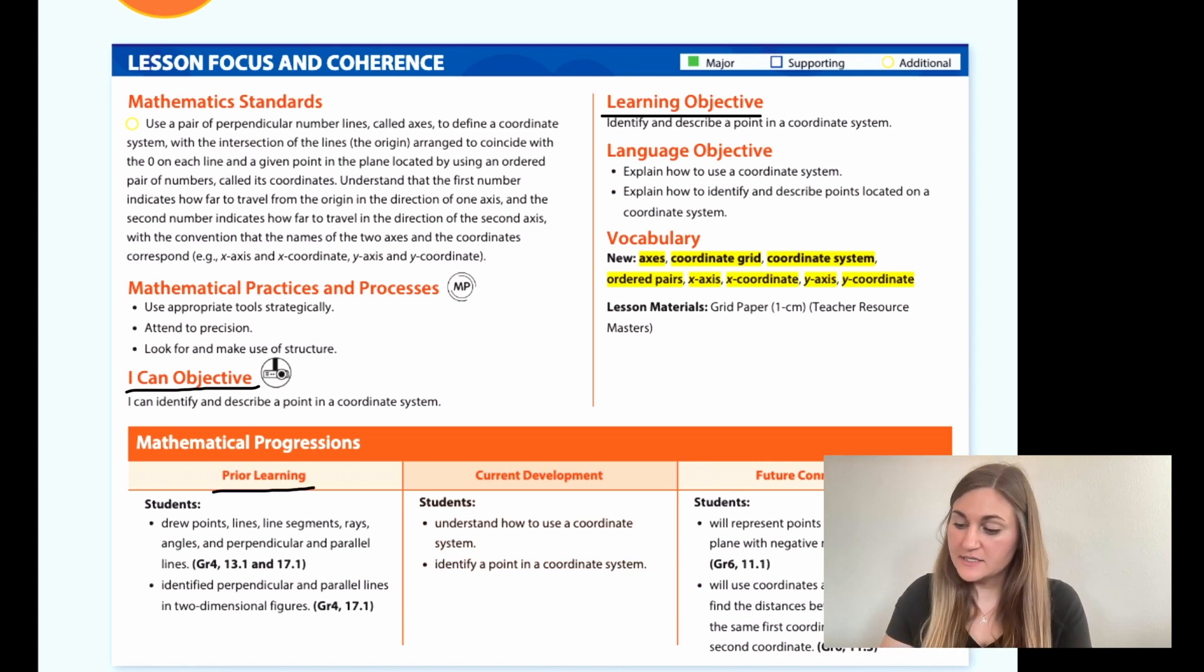The learning objective is to identify and describe a point in a coordinate system. And the prior learning is that students drew points, lines, line segments, rays, angles, and perpendicular and parallel lines. Students identified perpendicular and parallel lines in two-dimensional figures.